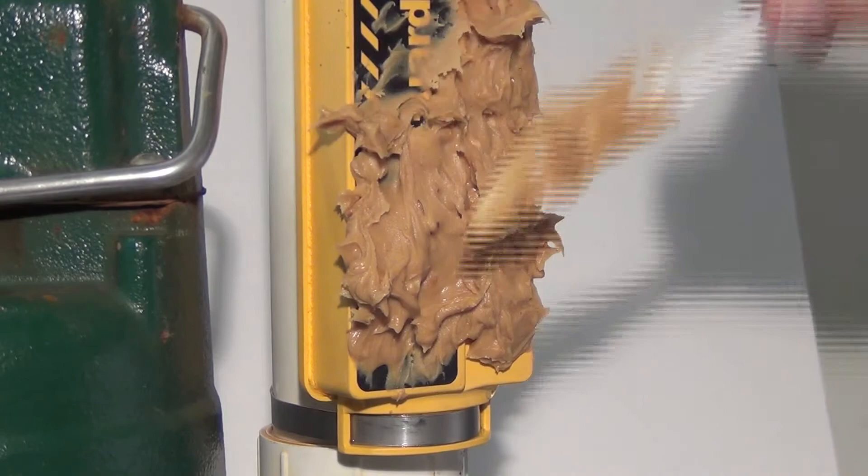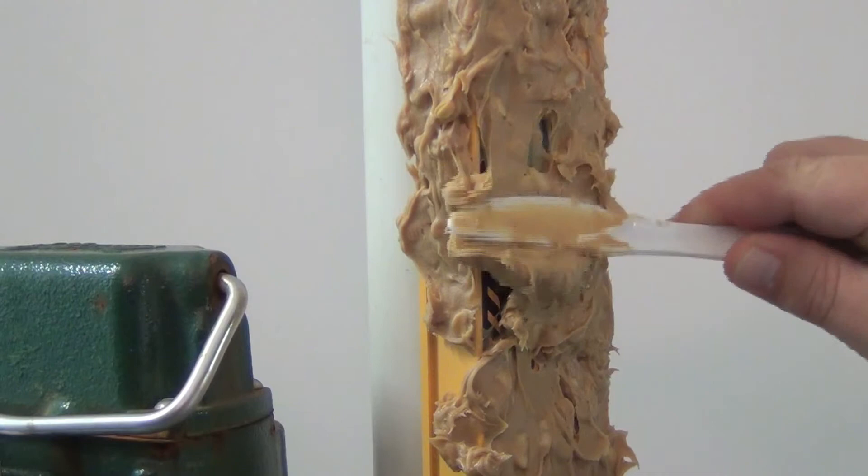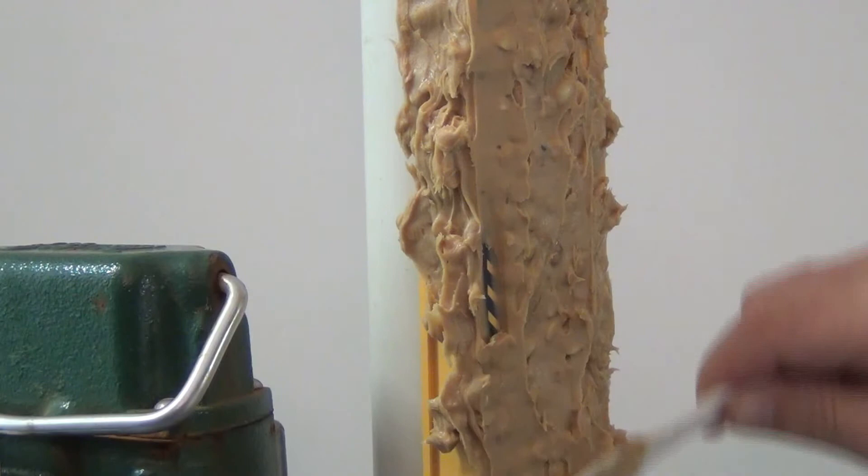To demonstrate the reliability of the Level Guard electronic sump pump switch in the worst sump pit environments, we have asked our technicians to coat the unit with peanut butter which will serve as a proxy for the worst contaminants in a sump or sewage pit. We will see that the Level Guard unit functions as designed.